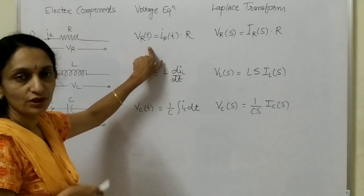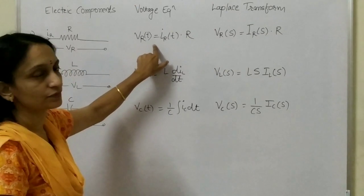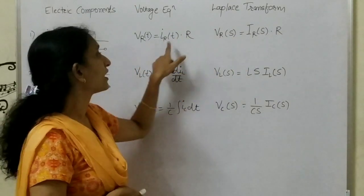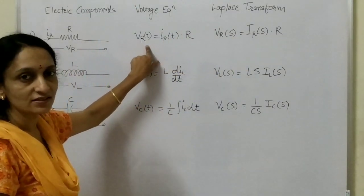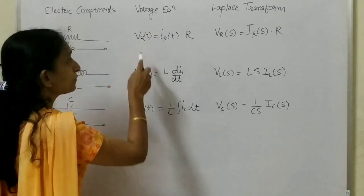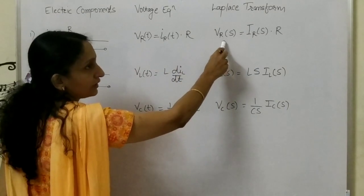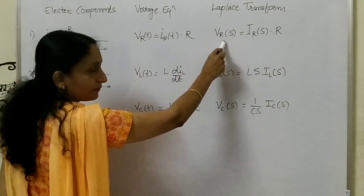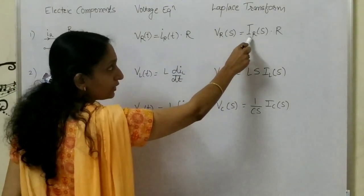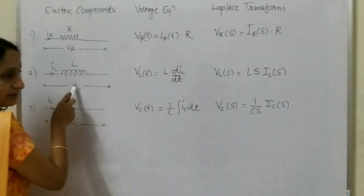When we take the Laplace transform, the time variable T becomes S. So VR of T equals IR into R, and taking the Laplace transform gives VR(S) equals IR(S) into R. Then for the inductor, IL is the current flowing through it, and the voltage across the inductor is VL equals L·dI/dt.